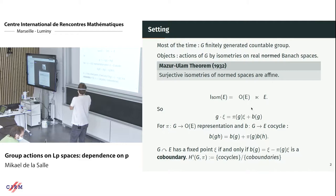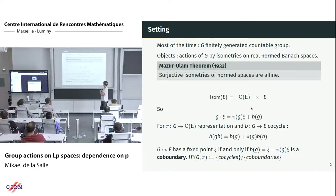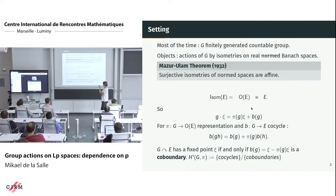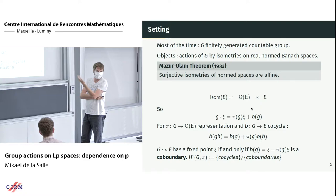If you have an action of G by isometries on a Banach space, it decomposes as: the action equals a representation by linear isometries π, plus a translation part called the cocycle — because the group action property for G·H translates to the cocycle property. This is very nice because the cocycle property is linear, turning the geometric question of studying isometric actions on Banach spaces into a functional analysis question: we have a Banach space of cocycles and can use functional analysis tools.